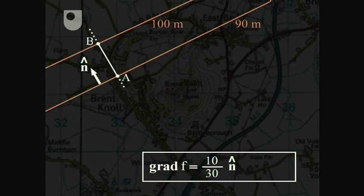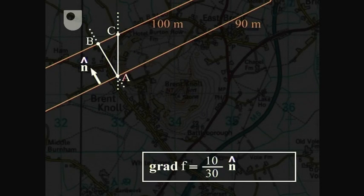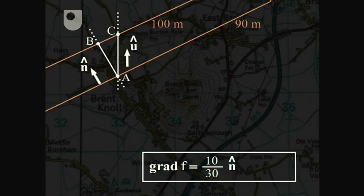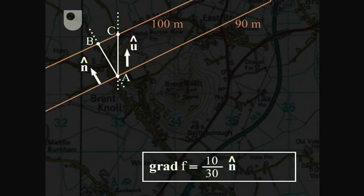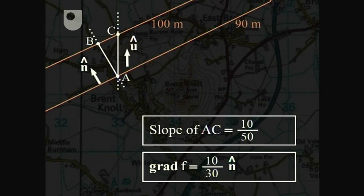Now we know the magnitude and direction of the gradient vector, but what's the slope of any other path — say this one, passing through points a and c? The direction of the path is parallel to the unit vector u. The slope of the path through a and c is given by the same rise of 10 metres, but divided this time by the horizontal distance corresponding to a to c, which is 50 metres. So the slope of a to c is one fifth. But all we've done so far is find the slope from the map — how does this relate to the gradient vector grad f?